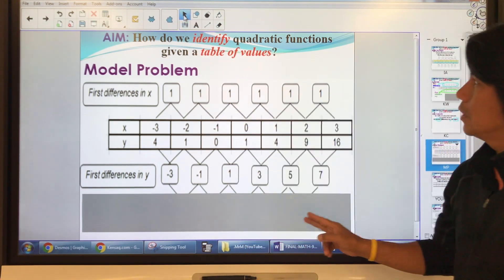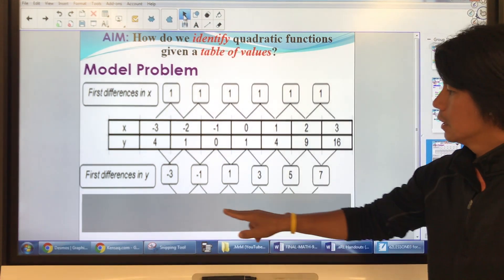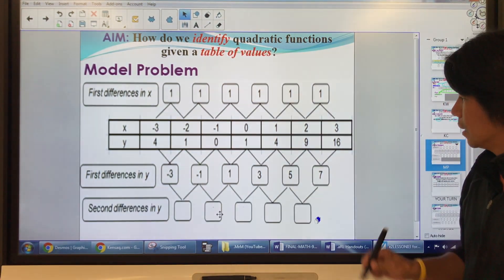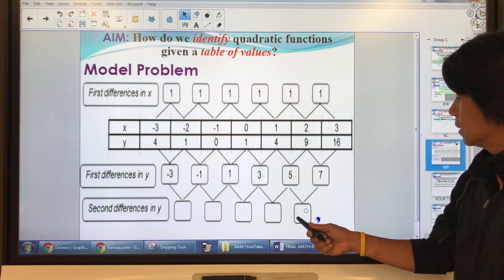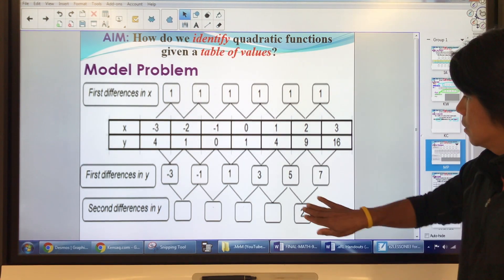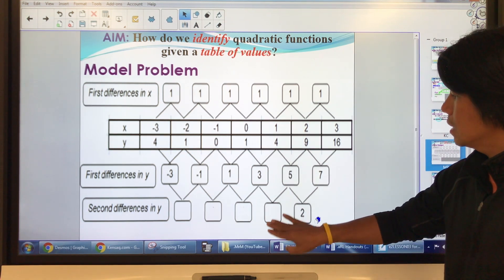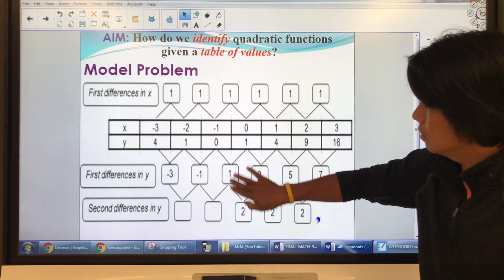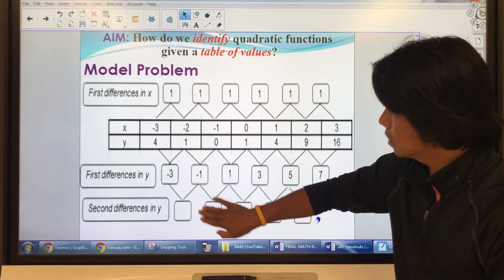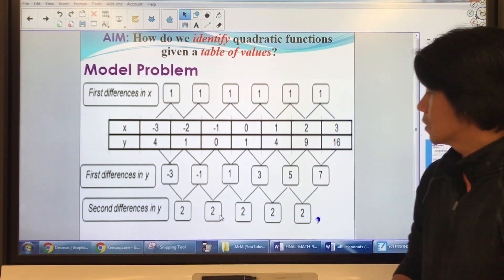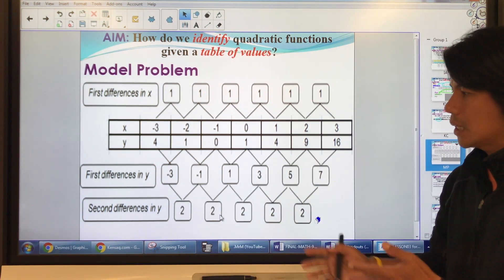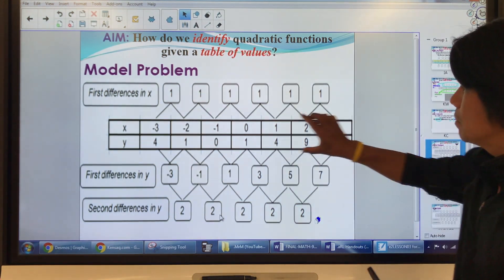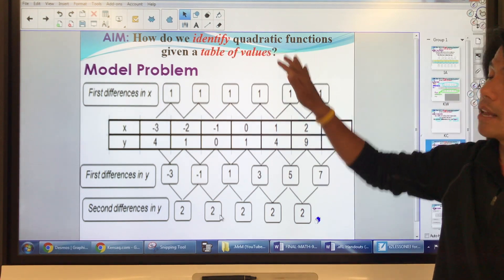How do we know if this is a quadratic function? We need to find the second differences in y. Let's do it together. 7 minus 5 that's 2, right? 5 minus 3 that's 2 also. 3 minus 1 is 2, 1 minus negative 1 that's 2, negative 1 minus negative 3 that's 2. So the second differences are equal. What can we conclude from this? This table represents a quadratic function.